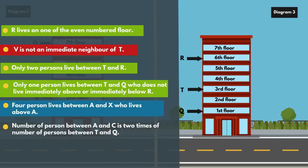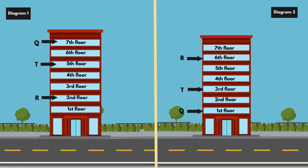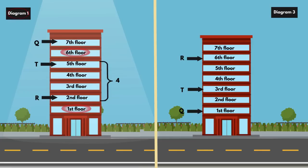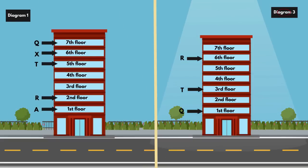Next statement: Four persons live between A and X, who lives above A. In Diagram 1, the remaining floors to fill are 1st, 3rd, 4th and 6th. If we place A on the 1st floor, then X must go on the 6th floor, as four persons live between them and X is above A. So place A on the 1st floor and X on the 6th floor. In Diagram 3, the remaining floors are 2nd, 4th, 5th and 7th. Placing A on the 2nd floor means X goes on the 7th floor. So place A on the 2nd floor and X on the 7th floor.